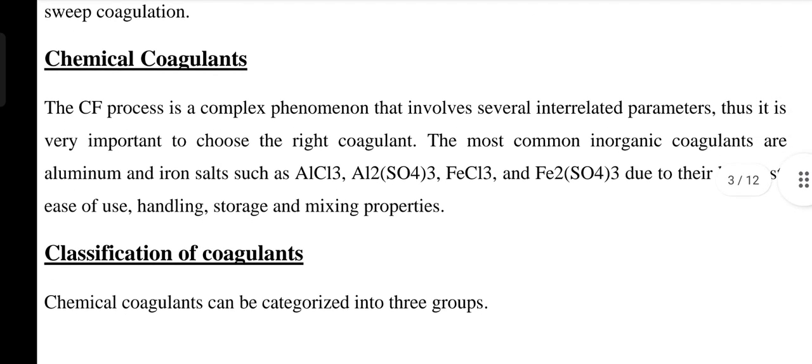What are chemical coagulants? The coagulation flocculation process is a complex phenomenon involving several interrelated parameters, so it is very important to choose the right coagulant. The most common inorganic coagulants are aluminum and iron salts, such as aluminum chloride, aluminum sulfate, iron chloride, and iron sulfate, due to their low cost, ease of use, handling, storage, and mixing properties.